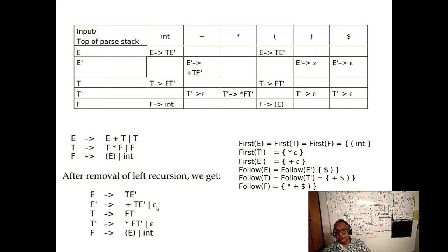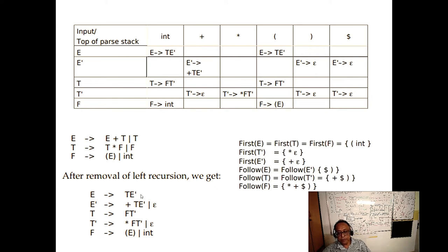E' can go to epsilon, so we must check that FIRST(E') and FOLLOW(E') have no common characters. FIRST(E') is {plus}. FOLLOW(E') is {$, )}. No common characters — confirmed. Similarly for T'. So the intersection is empty, and the grammar satisfies the LL(1) condition. Please verify this carefully, because otherwise LL(1) parsing is not possible — there should be no intersection.